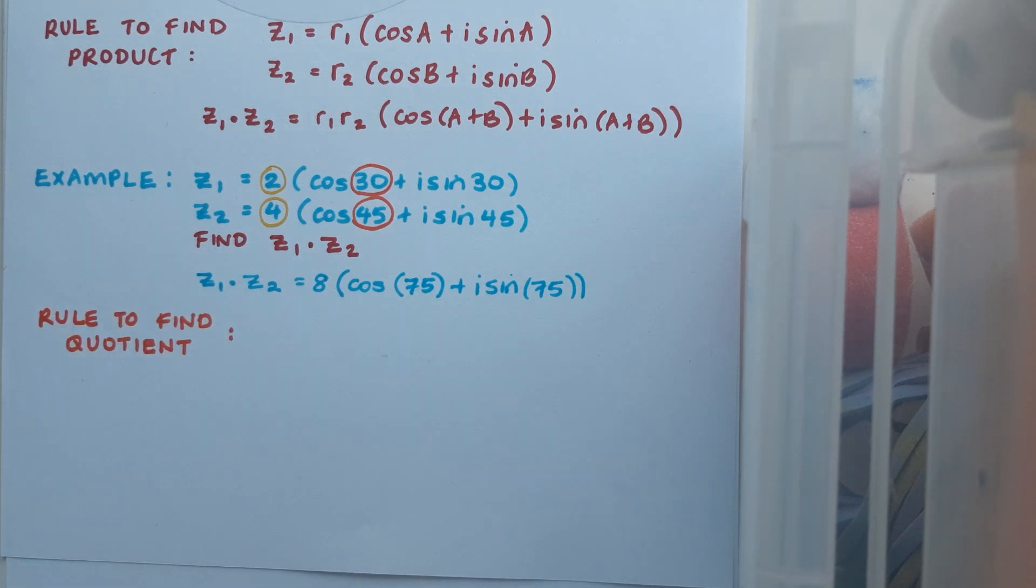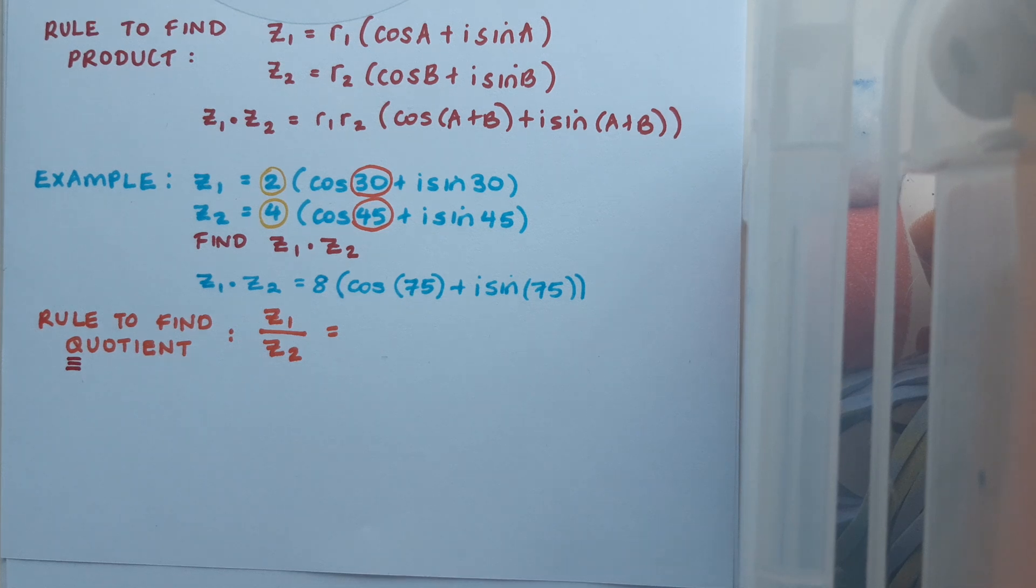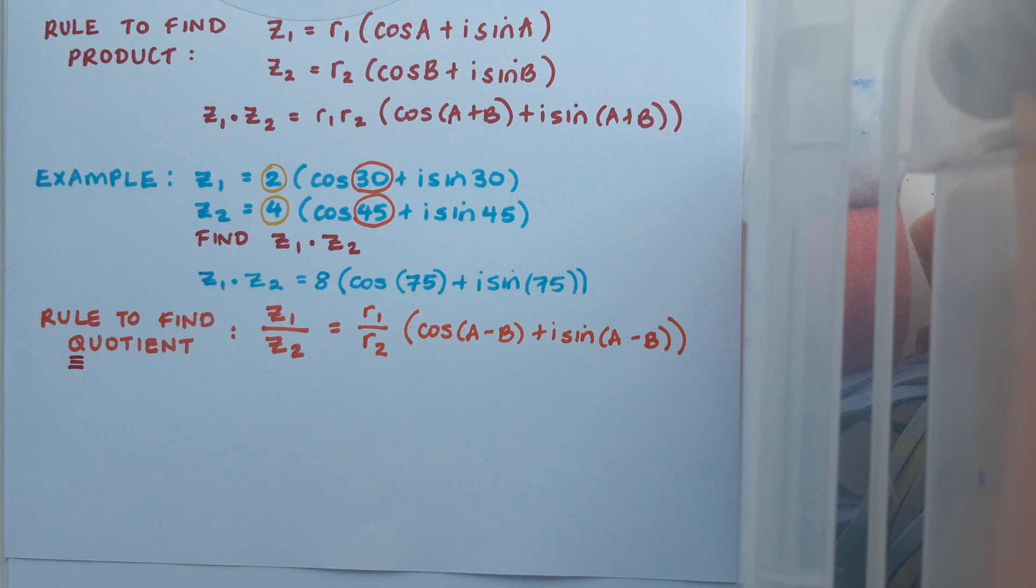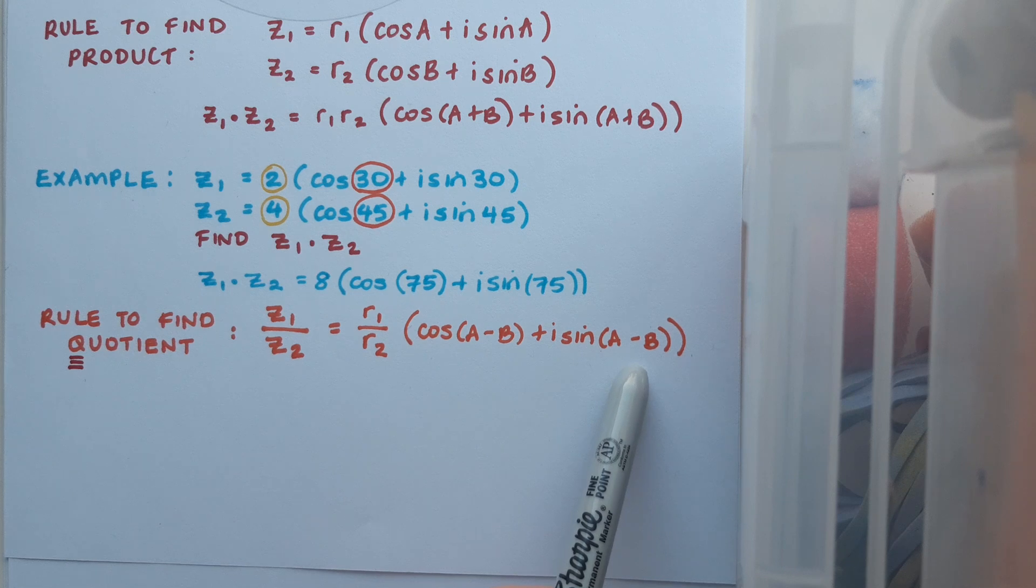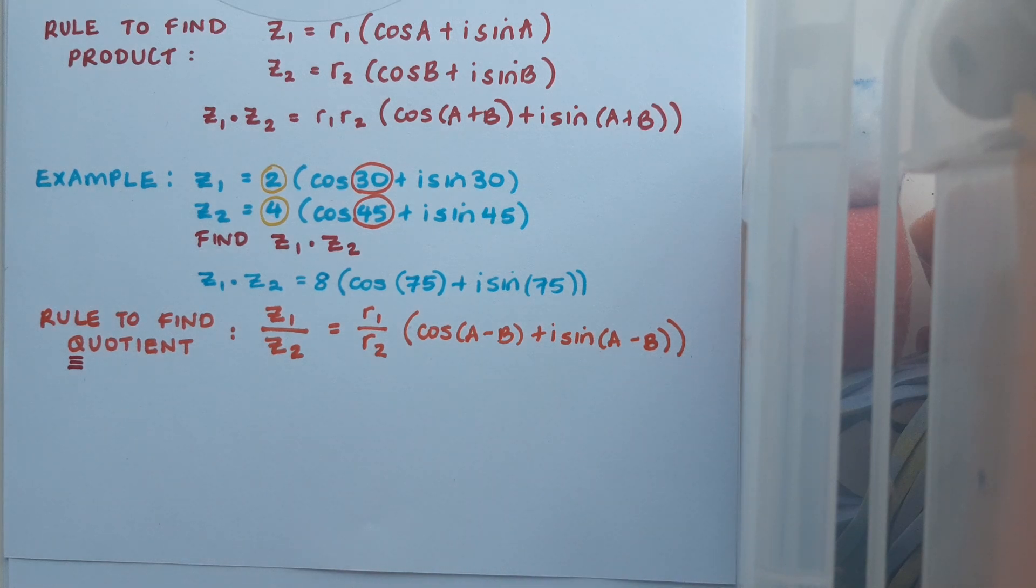We have an equally simple rule to find the quotient. Remember, quotient just means division. In fact, you may remember the Q from quotient is the symbol we use to represent rational numbers which can be written as fractions. Our formula for this is r1 over r2 (dividing the moduli), times cos(A - B) + i sin(A - B) (subtracting the angles).